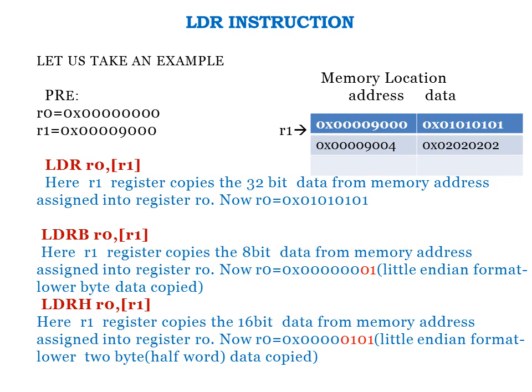Suppose you want to copy only 8-bit data. Then you write LDRB R0, [R1]. When you precede LDR with B, only the 8-bit data from the LSB — that is 01 — is copied into register R0. If you say LDRH R0, [R1], that means you are copying 16-bit data from the memory, so 0x0101 — the 16-bit data — is copied into register R0.